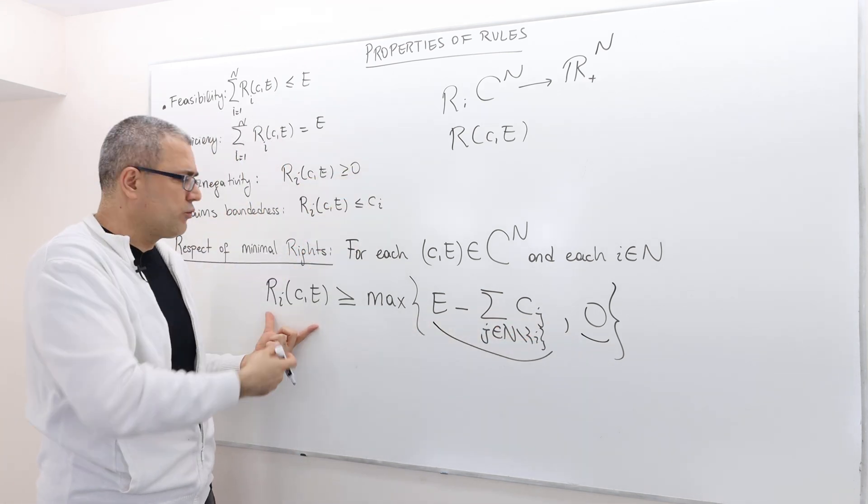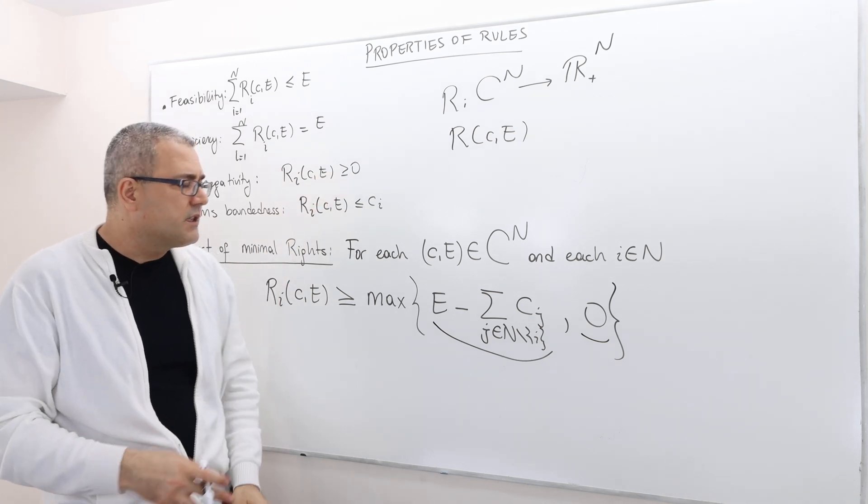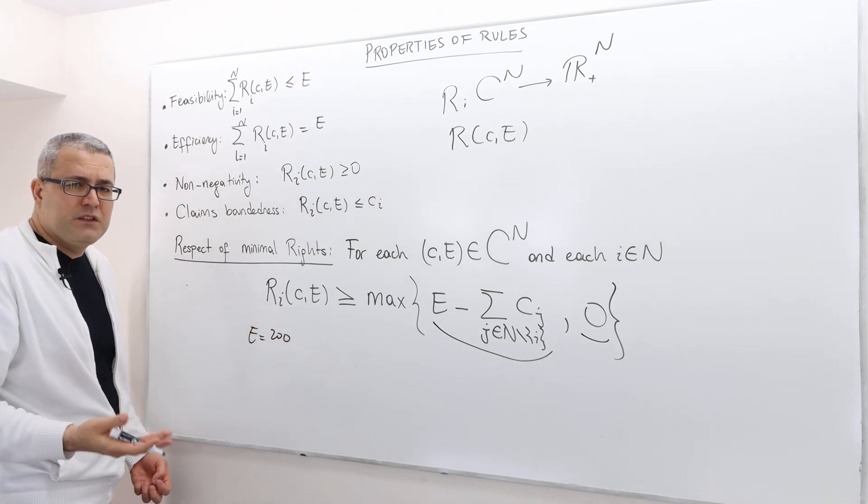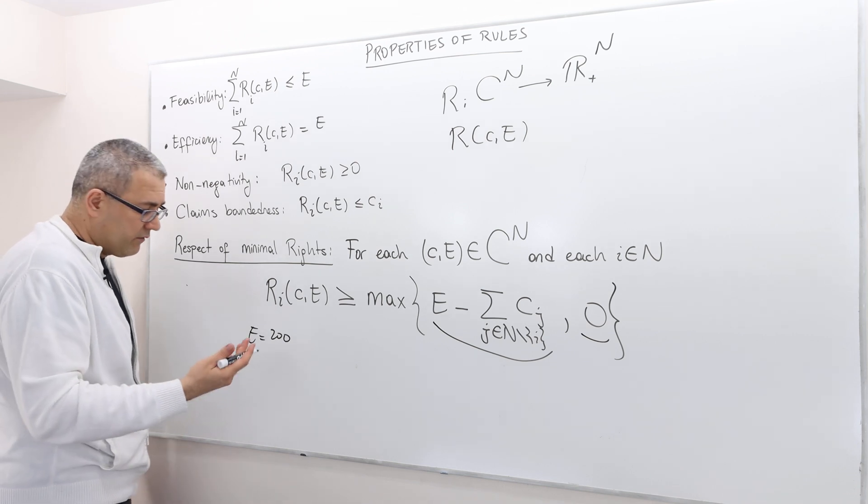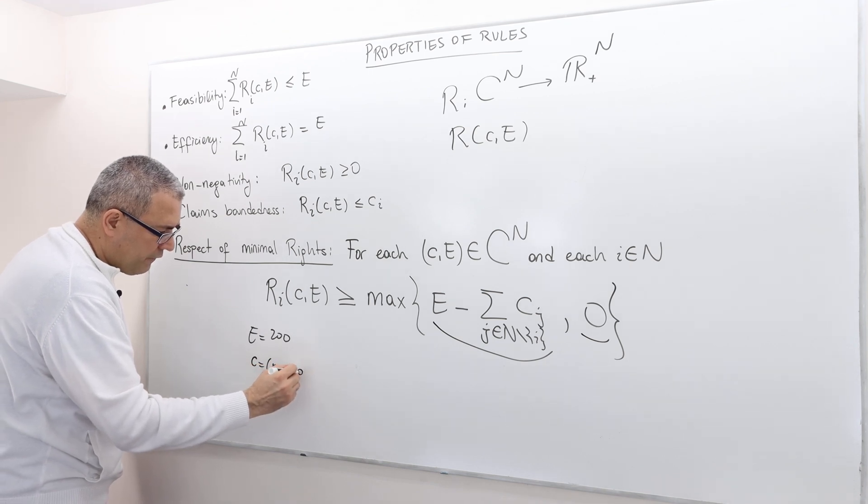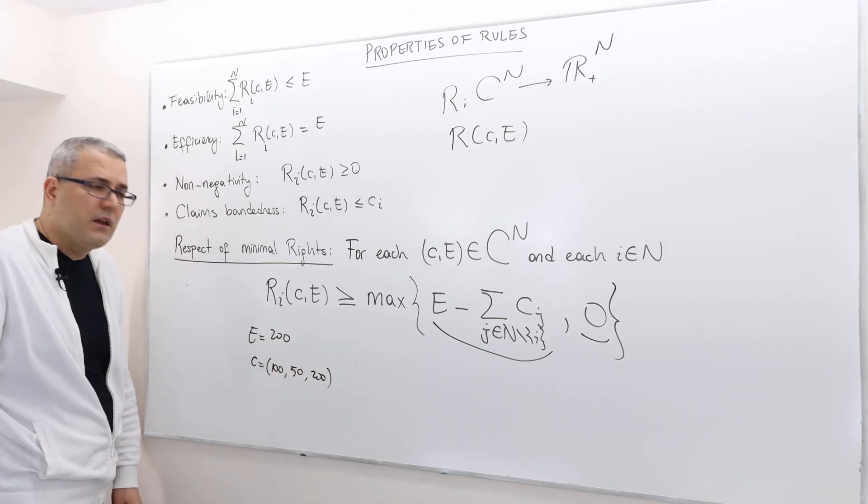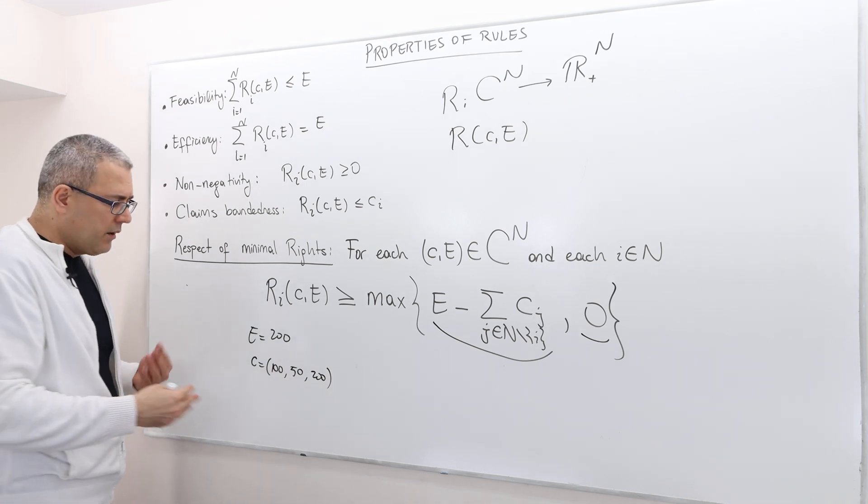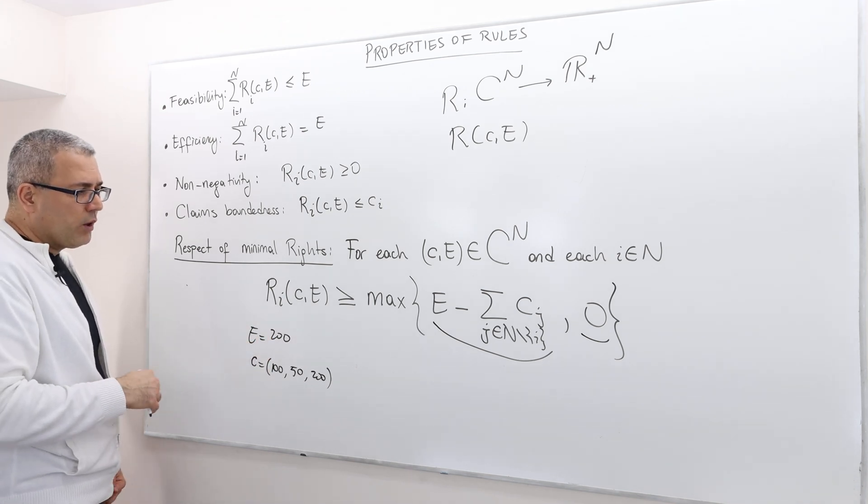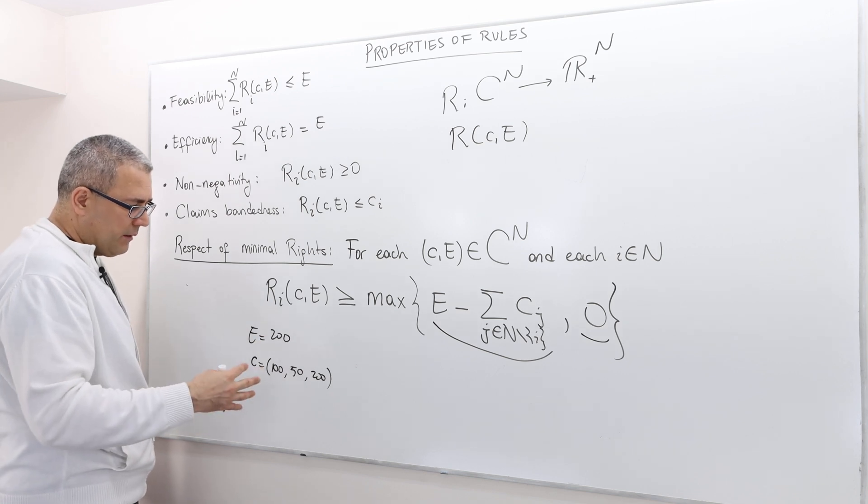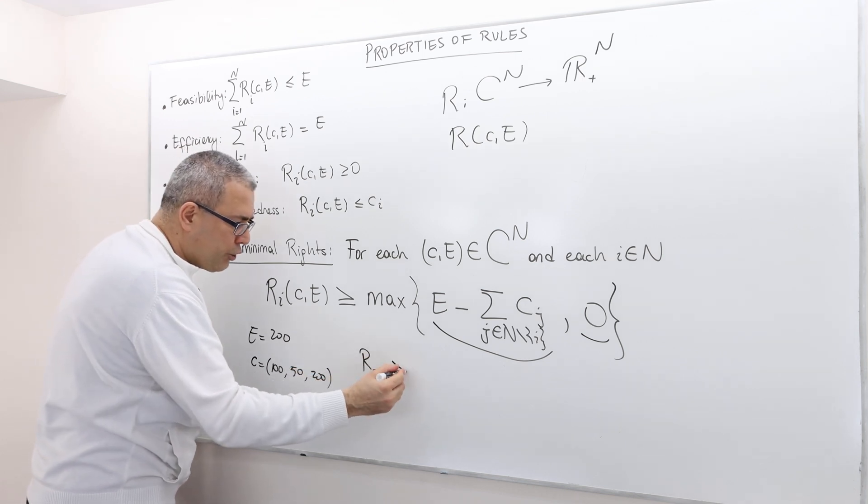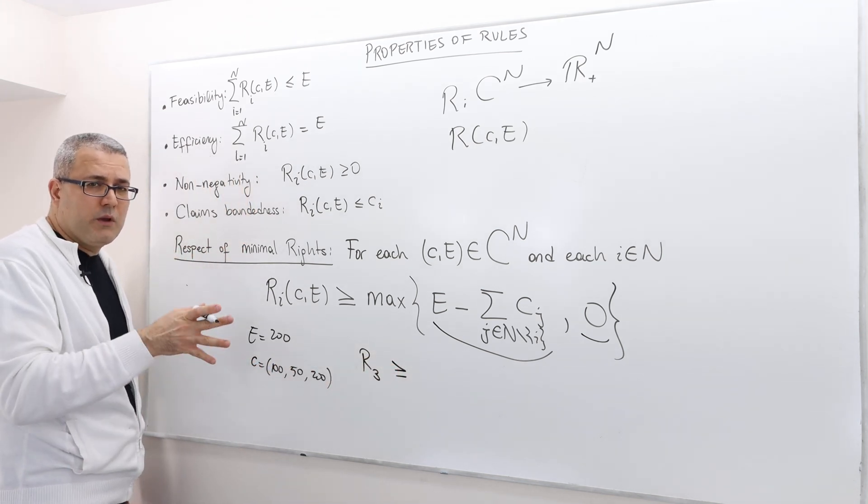So what does that mean? That means, for example, if the claim problem is such that we are going to split $200 between three agents and the claims are as follows: $100, $50, and $200. So as you see, it is a claim problem because the total claim exceeds the surplus. Well, here, what we can see is that when you look at player three's point of view, his award depends on the rule that we will define, obviously.